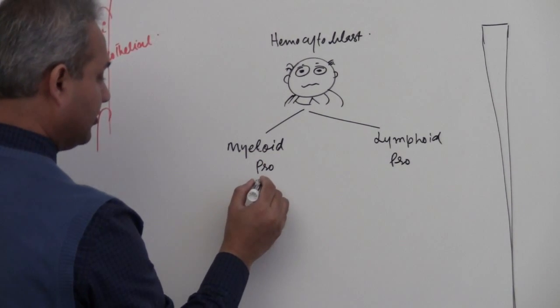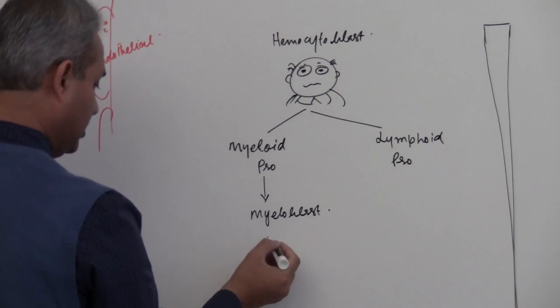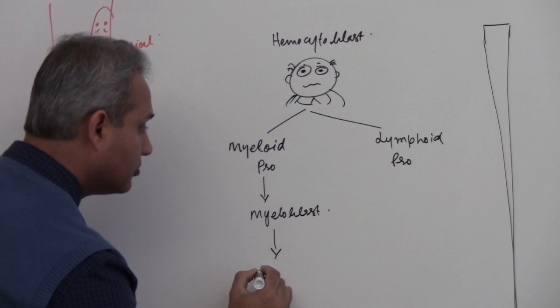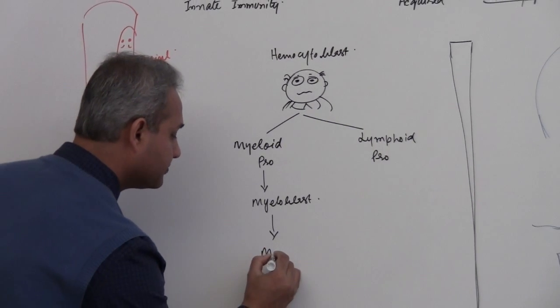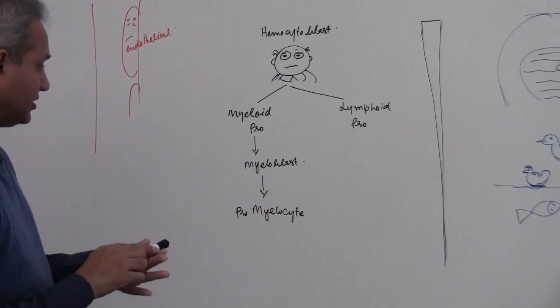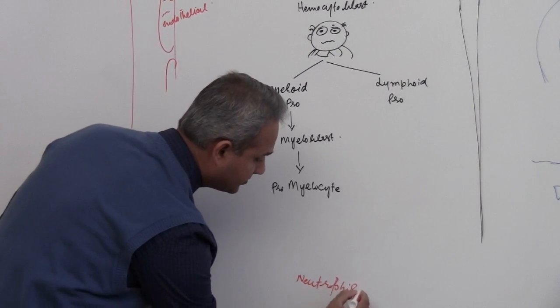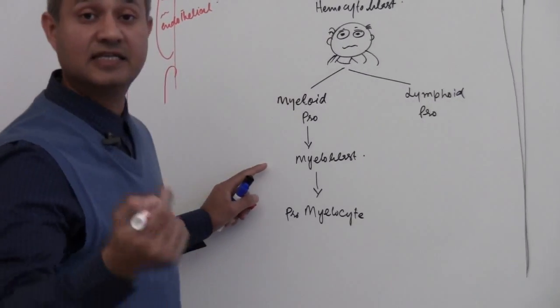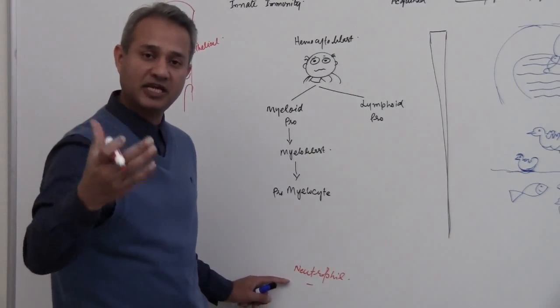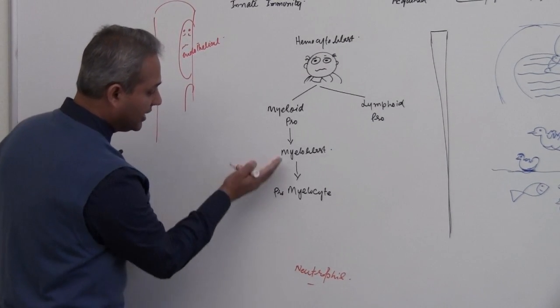From the myeloid progenitor will come the myeloblast. This myeloblast would then give rise to, in our case, the neutrophils. This would give rise to myeloblast, and we would have promyelocyte. The important thing is this: at the end, we are going to end up with the neutrophil. This is the final mature cell. As long as this cell is in the bone marrow being formed, it is called myelo. Once that myelo leaves the bone marrow, then depending upon its staining, we will call it a neutrophil, basophil, or eosinophil.